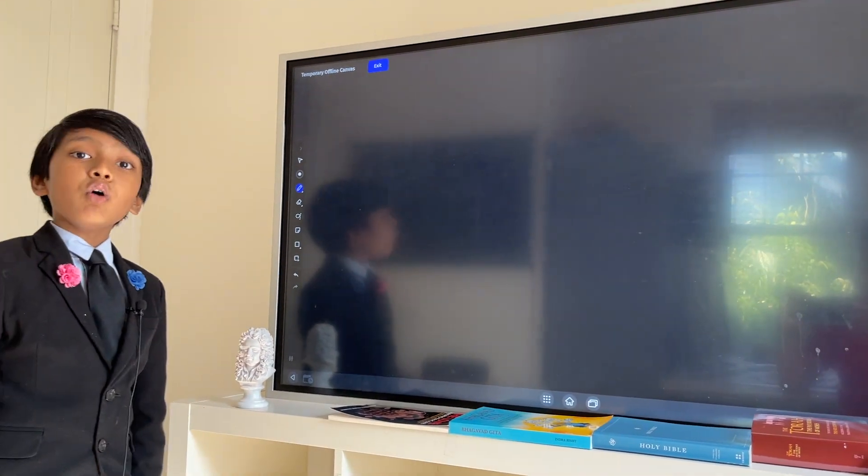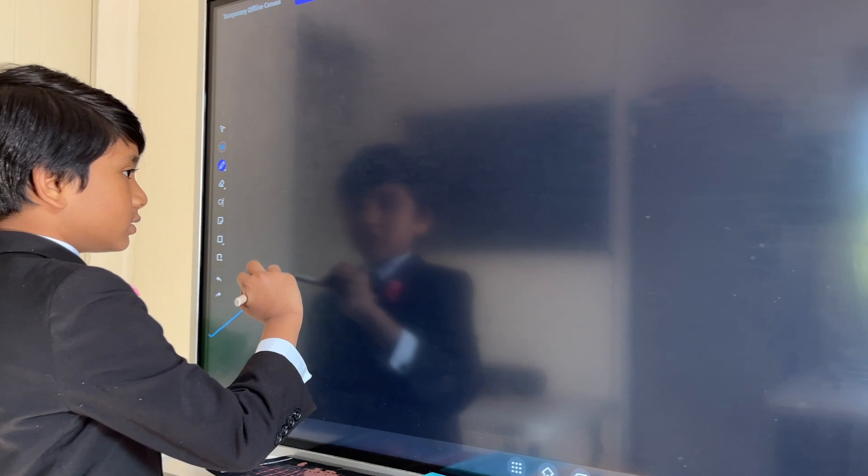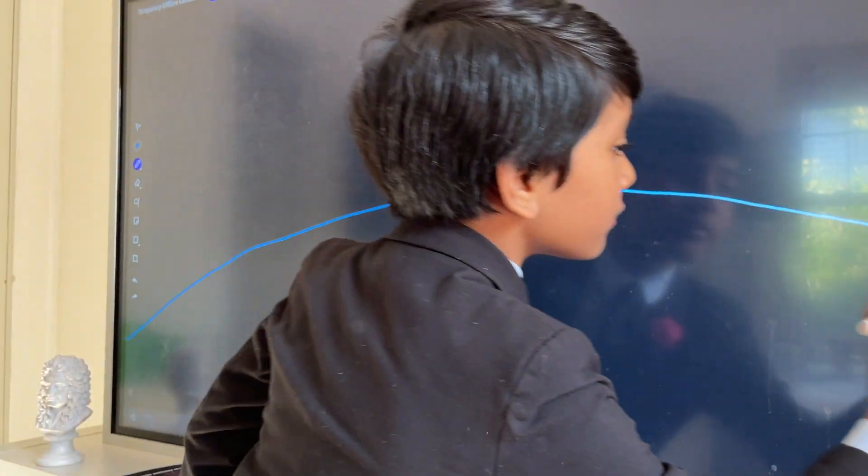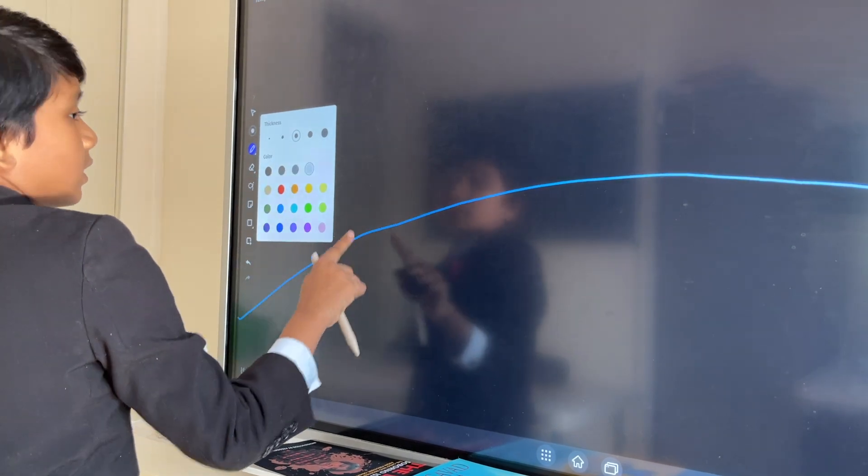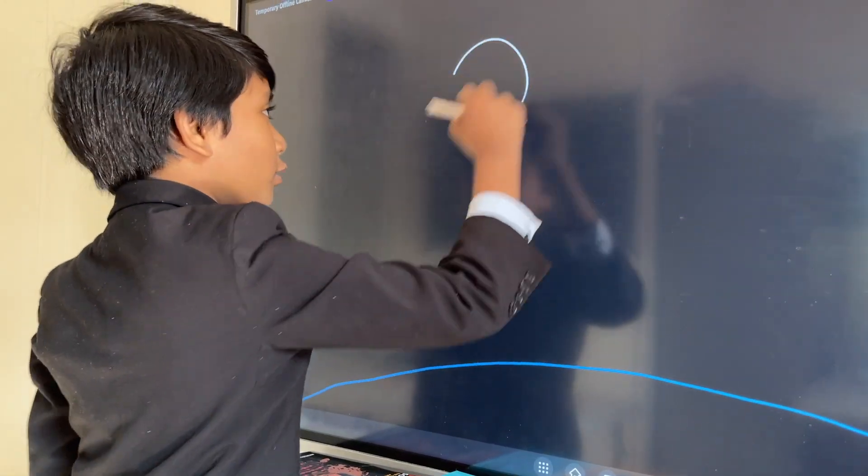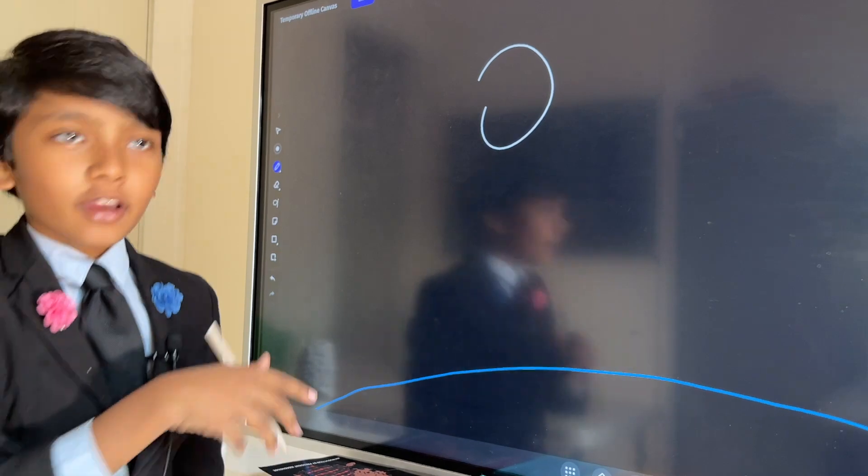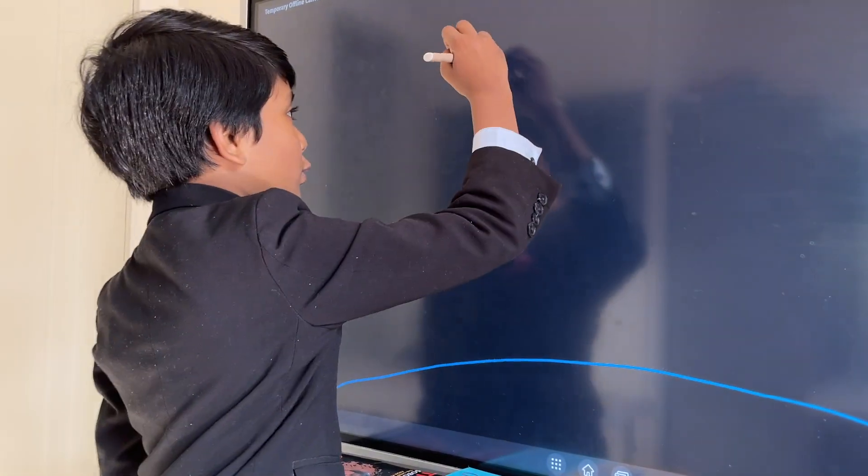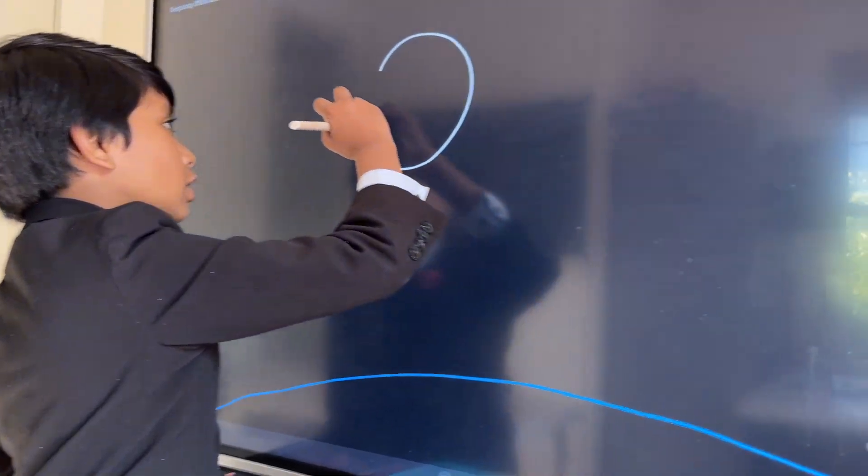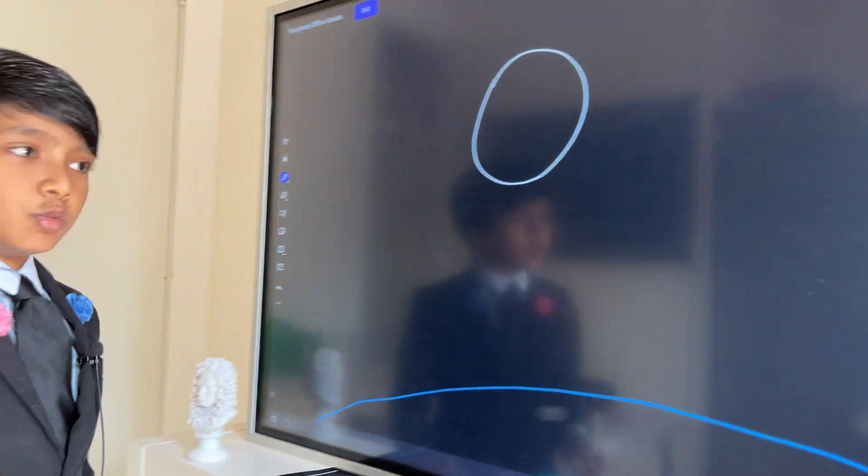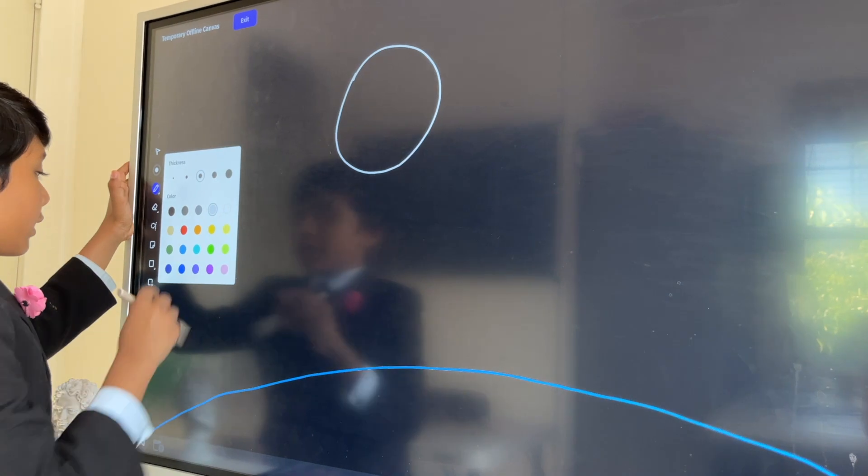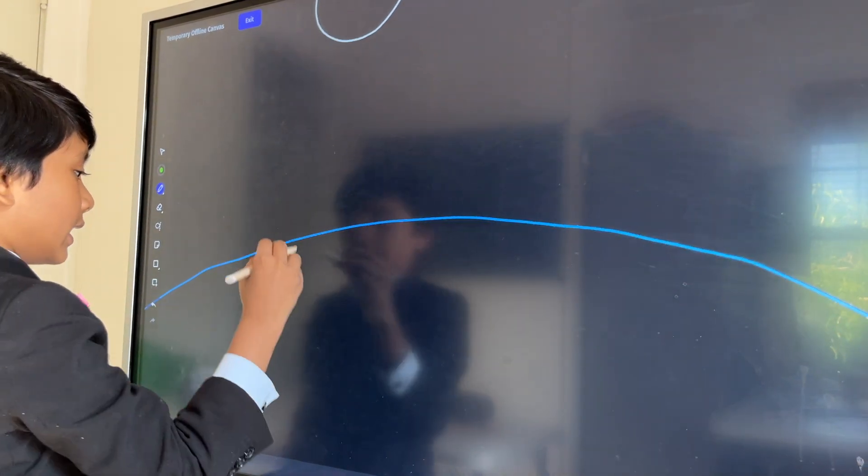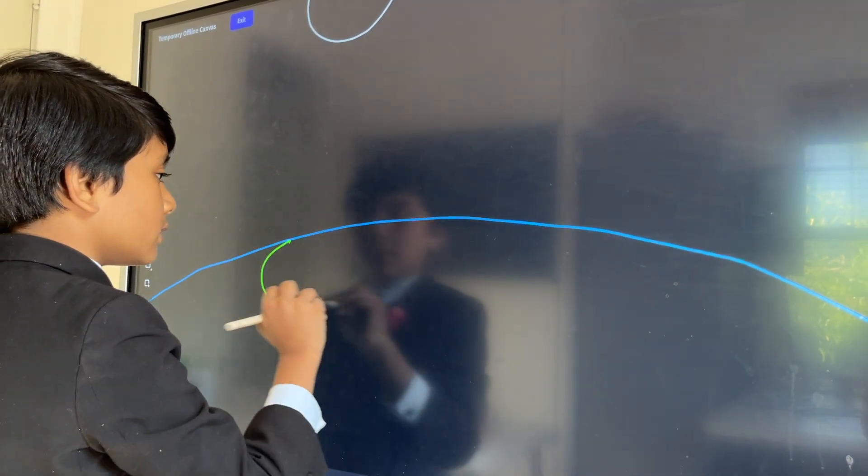All right, so now we know what a reference frame is. So let's draw a diagram. First by the Earth, and then let's draw a little piece of rock or sea that some Americans theorize called the moon. So that's not the moon, so I think that's the moon.